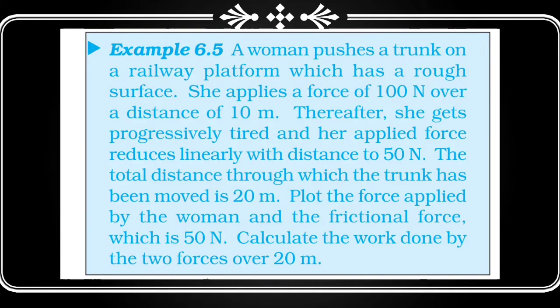Example 6.5: A woman pushes a trunk on a railway platform which has a rough surface. She applies a force of 100 Newton over a distance of 10 meter. Thereafter, she gets progressively tired and her applied force reduces linearly with distance to 50 Newton. The total distance through which the trunk has been moved is 20 meter. Plot the force applied by the woman and the frictional force, which is 50 Newton, and calculate the work done by the two forces over 20 meter.